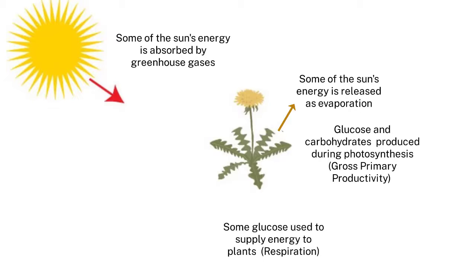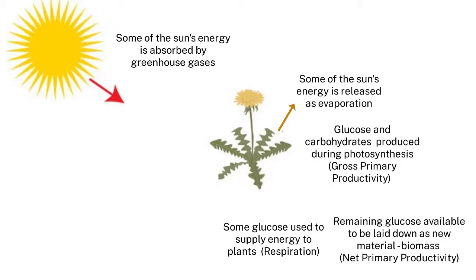That's called net primary productivity — when solar energy is captured in the form of plant biomass, and that supplies the whole food system, the whole ecosystem, from the microbes in the soil to animals that chew on leaves. It all starts with photosynthesis.